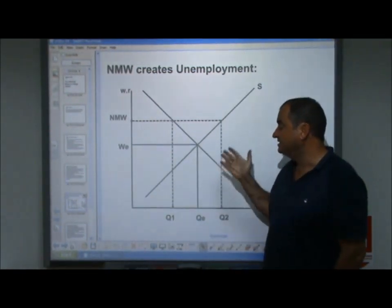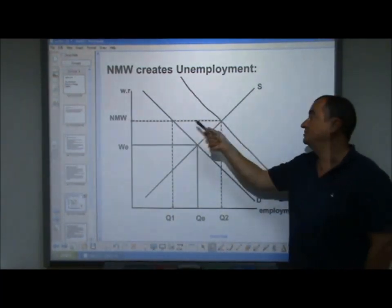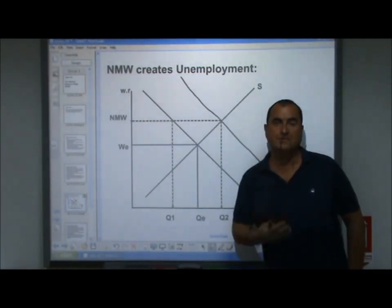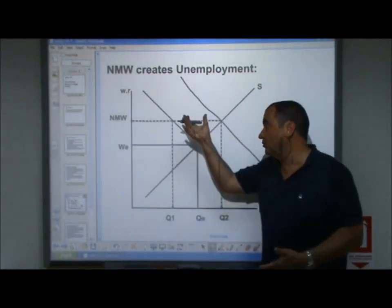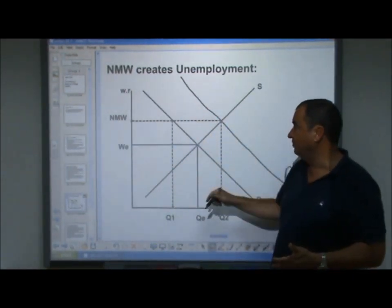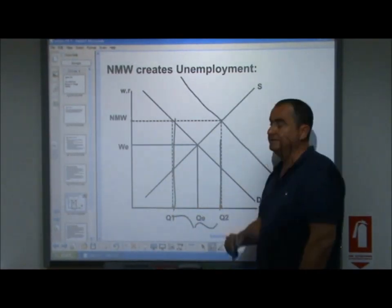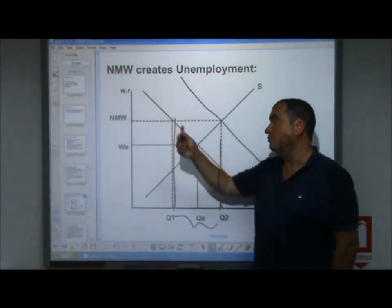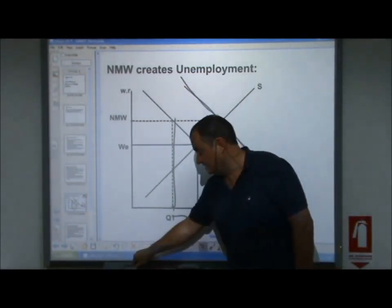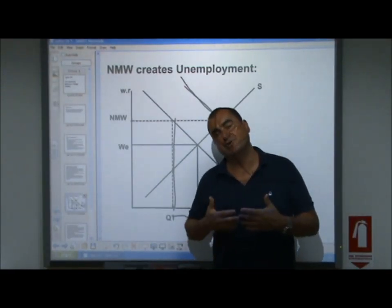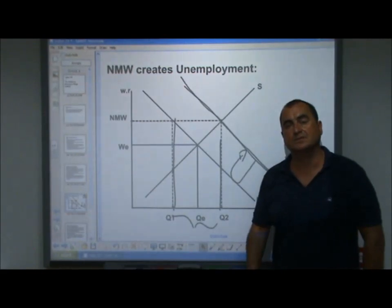Even if unemployment didn't arise immediately, consider a scenario where the minimum wage was initially the equilibrium wage, but then demand for labour falls from D1 to D2. Normally a new equilibrium would be reached, but now the wage cannot fall below the minimum, creating unemployment. This unemployment — the distance between Q1 and Q2 — would only be resolved if demand recovered. So the minimum wage can create unemployment especially during a recession when the demand curve falls and the minimum wage is left stranded above equilibrium.